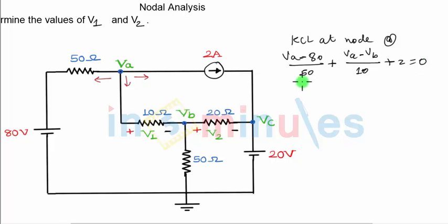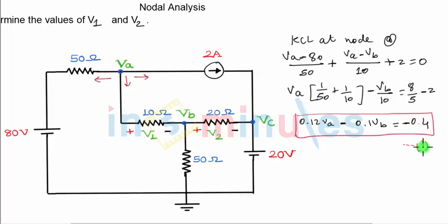Now let us simplify this equation. If I take VA common, I get 1 upon 50 plus 1 upon 10. Next term is for VB, which is minus VB upon 10, and the constants will be on the right hand side. Minus 80 upon 50 goes on the other side to become plus 8 by 5, and minus 2 also comes on the other side to become minus 2. And if you simplify this, you get the first equation: 0.12 VA minus 0.1 VB equals minus 0.4. I'll call this as equation one.